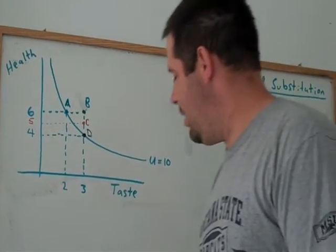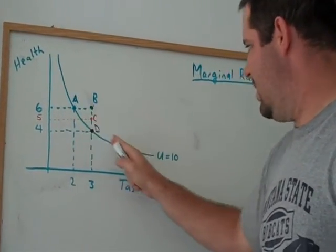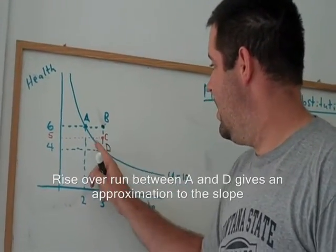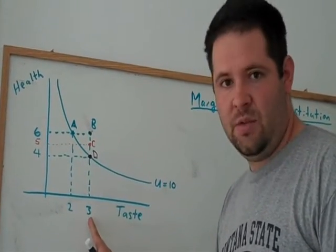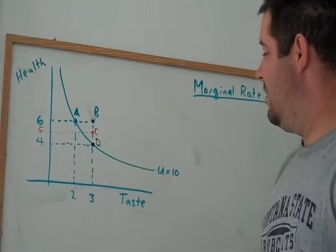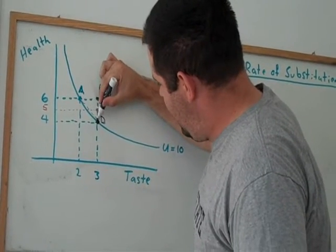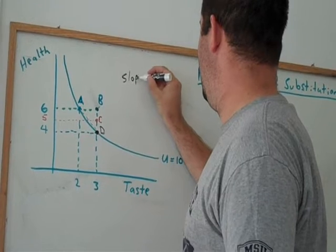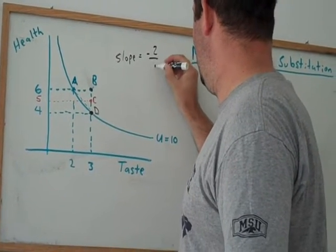So, if we want to think about what the slope is of this indifference curve, all we do is rise over run. That's going to be the slope. You'll notice that the way I've drawn this, the run is 1, and the rise is actually a fall of 2. And so, the slope here between A and D of this line that connects A and D will equal negative 2 over 1, rise over run.